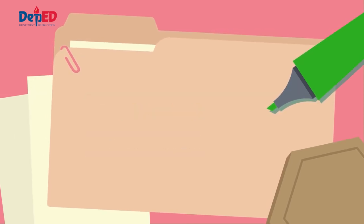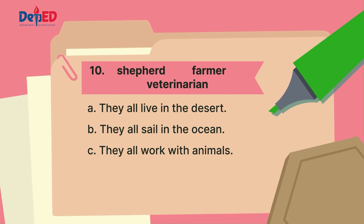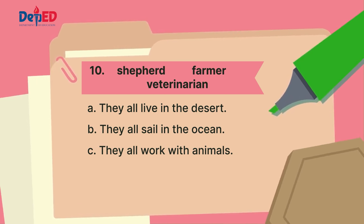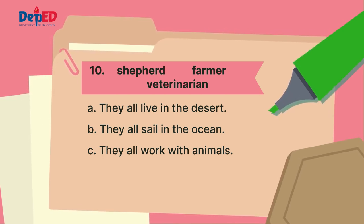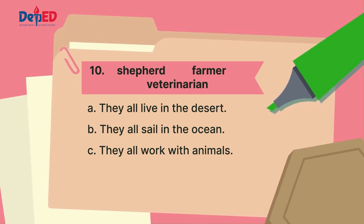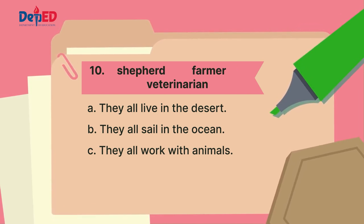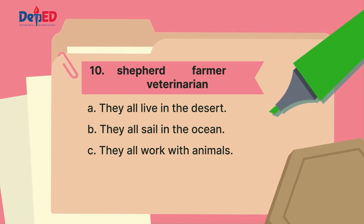The words in the box for number ten are: shepherd, farmer, veterinarian. Letter A: they all live in the desert. Letter B: they all sail in the ocean. Letter C: they all work with animals.